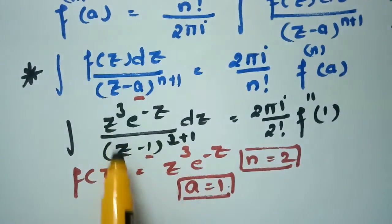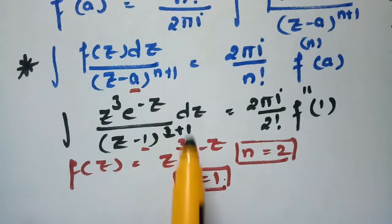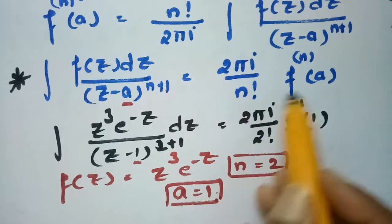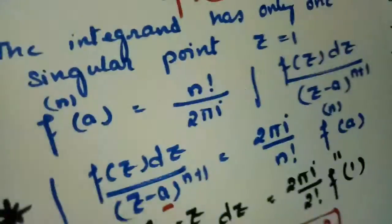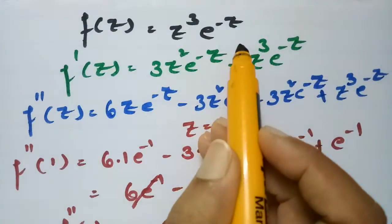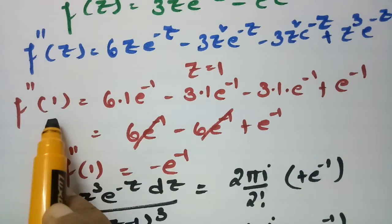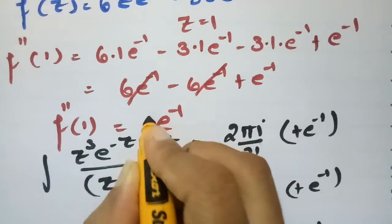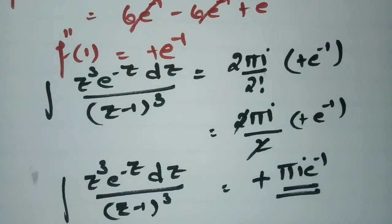We need this integral, so rearranging, this is the formula. Comparing: f(z) equals z³e^(-z), a equals 1, and since 3 equals 2 plus 1, n equals 2. Substituting n equals 2 and a equals 1, we need the second derivative. After computing f(z) and evaluating at z equals 1, we get plus e inverse, and substituting gives the final answer pi i e inverse.